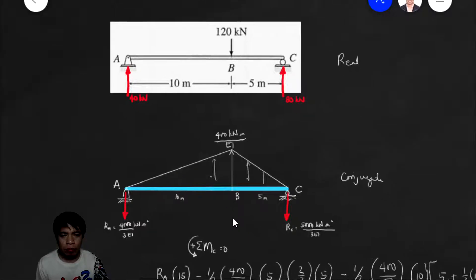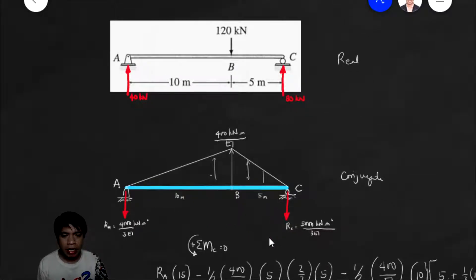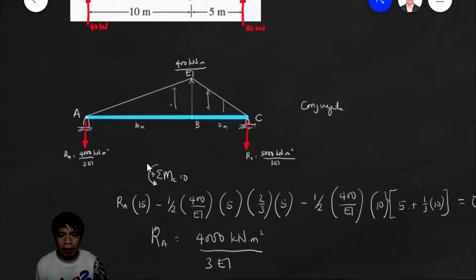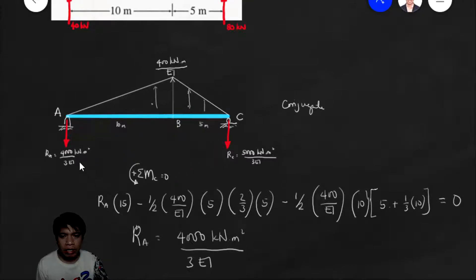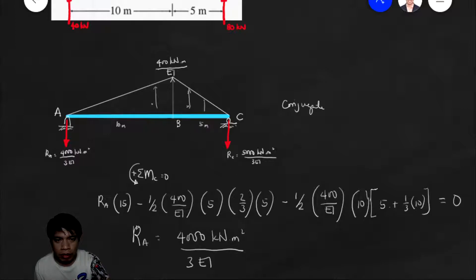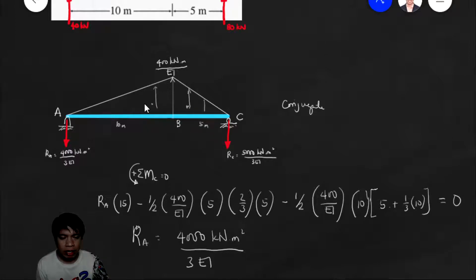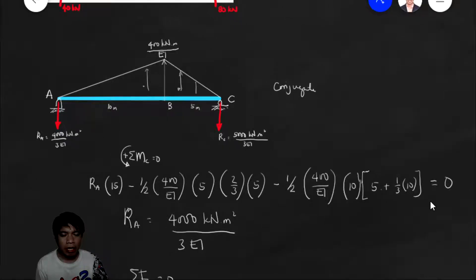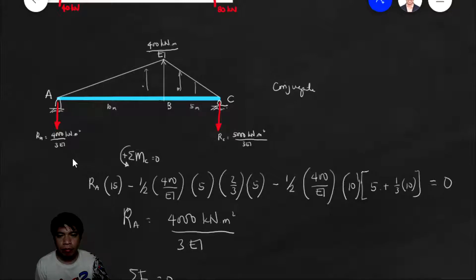Of course, we need to compute the reactions here. Since this is a hinge and this is a roller, we can get the reaction at A by summation of moment about point C. That is: RA times 15, minus one-half times 400 over EI times 5, times the distance of the centroid which is two-thirds of 5, minus one-half times 400 over EI times 10, times the distance of the centroid which is 5 plus one-third of 10, equals zero. So R sub A comes out to 4,000 over 3EI.